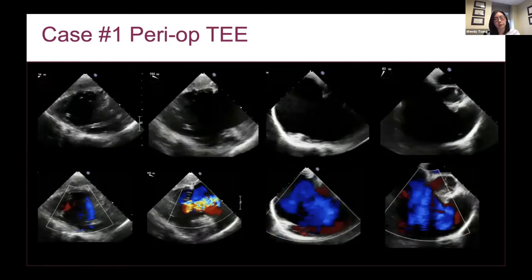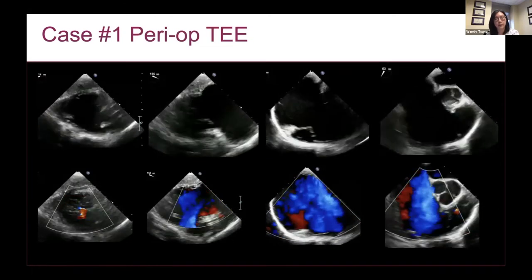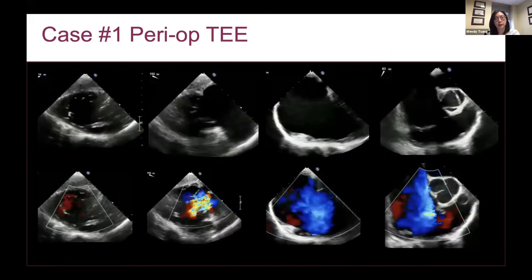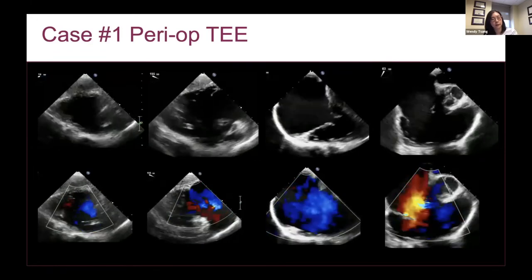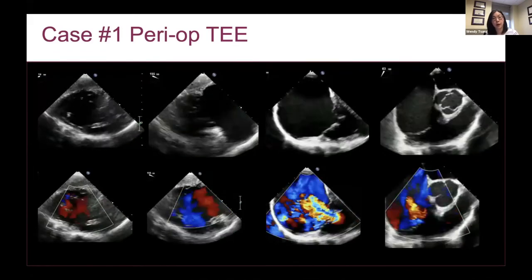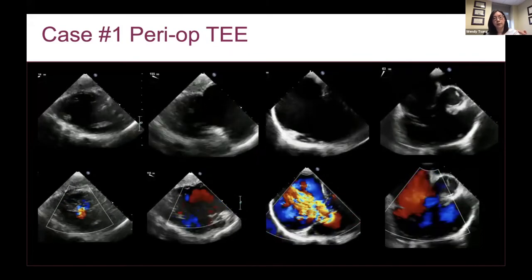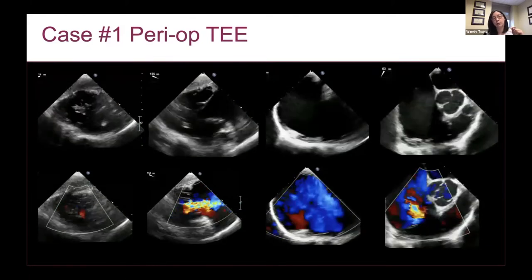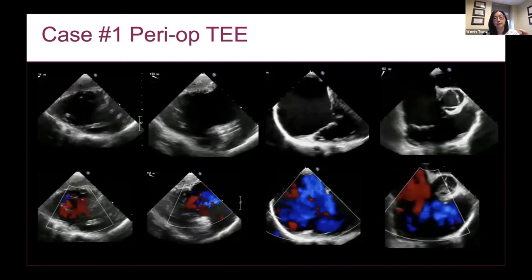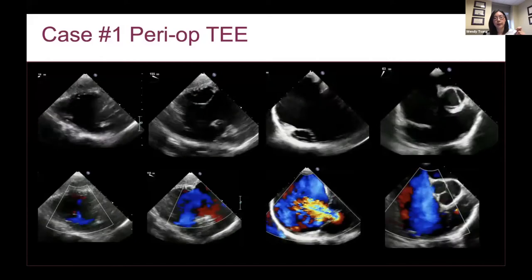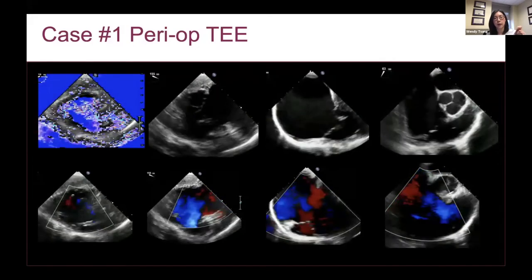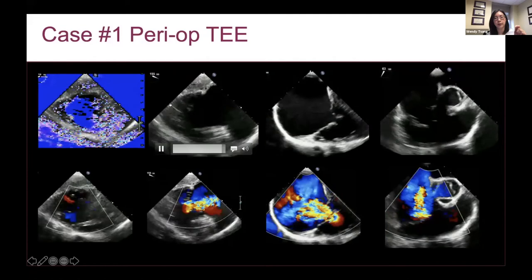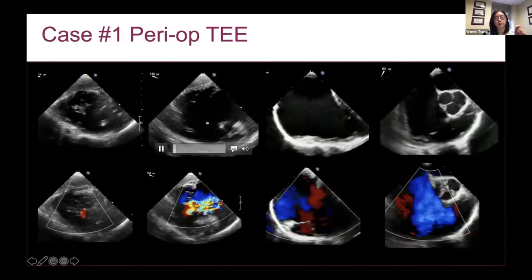We don't normally do transesophageal echocardiograms for tricuspid valve assessment, and part of the reason is the location of the tricuspid valve. Images on surface study tend to be much nicer than on TEE for most patients. As cardiologists, we tend to send people for tricuspid regurgitation surgery with just a transthoracic study. Our volumes of TEE for tricuspid valve assessment have increased because of the newer tricuspid clip and percutaneous valve assessment.